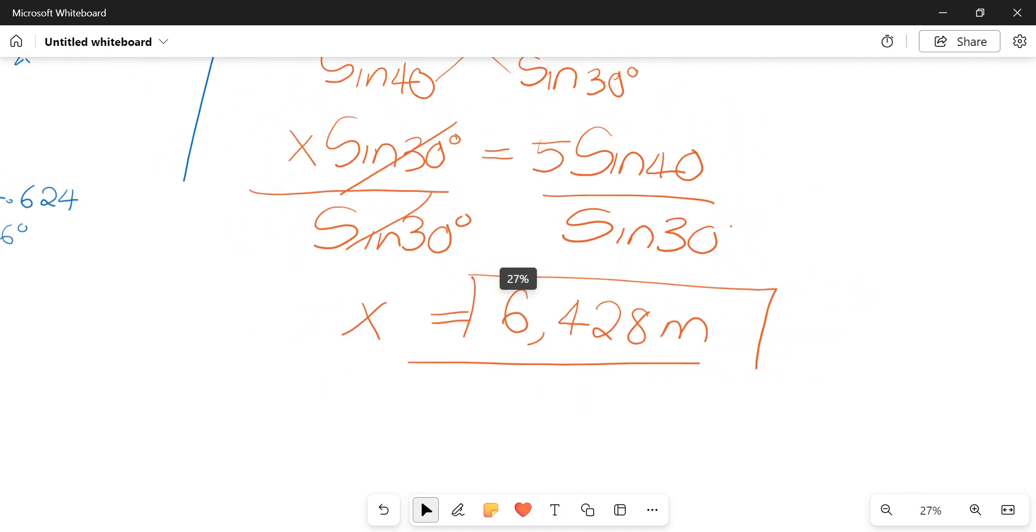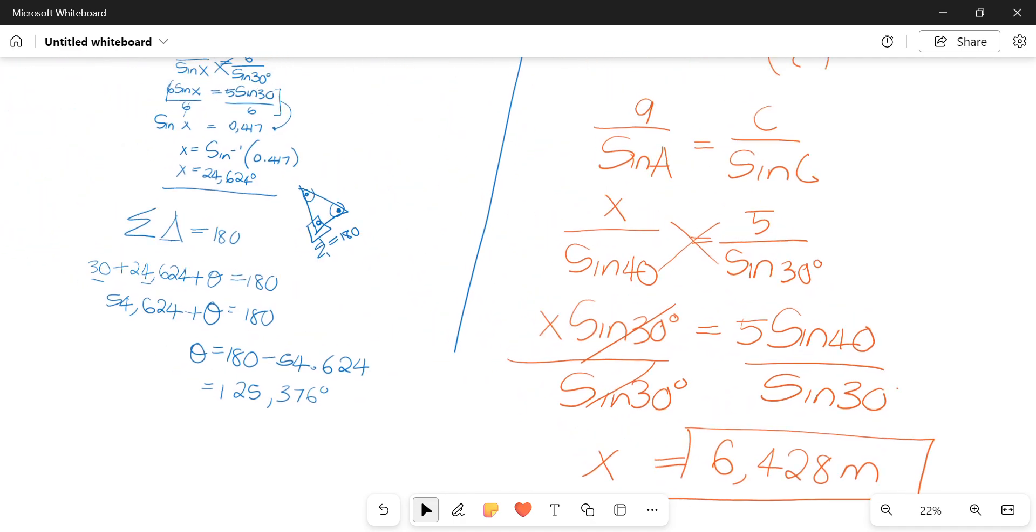And that is the included length that we're trying to solve for. And there you have it, the two methods we use while calculating the sine rule to calculate unknown variables. If you have any question at any point, you know what to do. Adios.